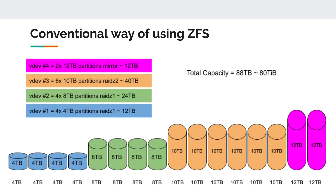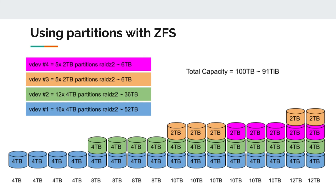So this is how a conventional ZFS user might configure this mix of drives. But this video is not about following convention. Instead, what we're going to do is use partitions to break up the physical drives in order to achieve what I think could be a more optimal ZFS pool configuration. What we've done here is carved out 4-terabyte partitions out of the larger drives — we chose 4 terabytes since that's the lowest common denominator size that works with the first four 4-terabyte drives. In this way we create a 16×4-terabyte RAID Z2 VDEV, identified in light blue.